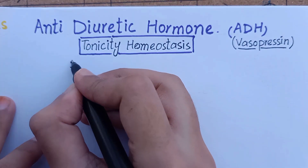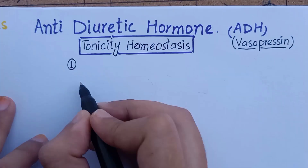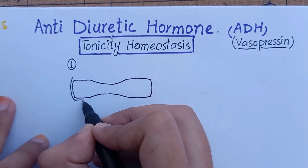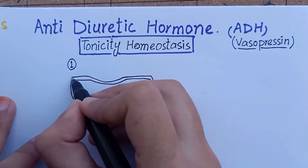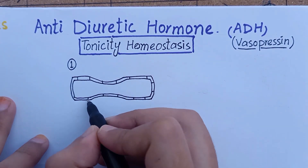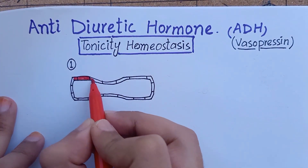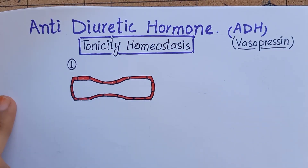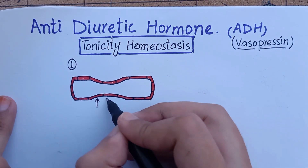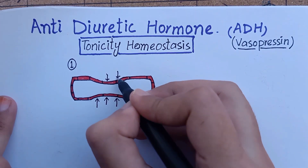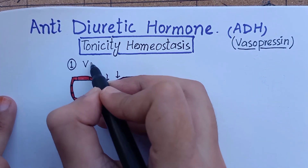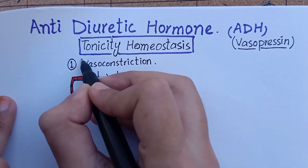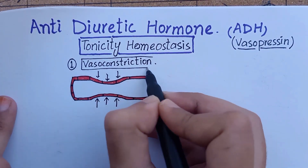ADH performs this function by two mechanisms. First, ADH is a powerful vasoconstrictor substance in our body. During the time of fluid loss, for example severe hemorrhage or dehydration, high amounts of circulating ADH can cause enough vasoconstriction to bring arterial pressure back to normal.